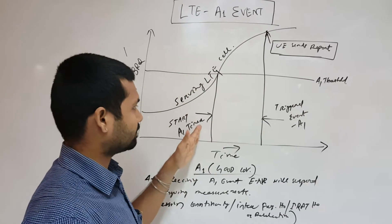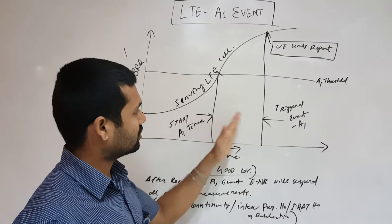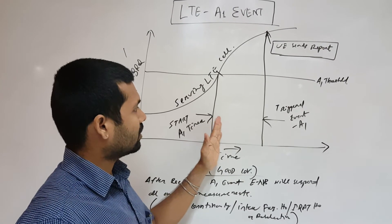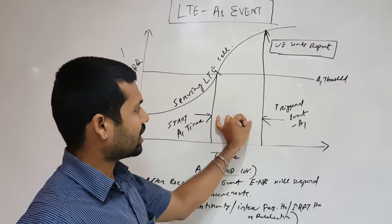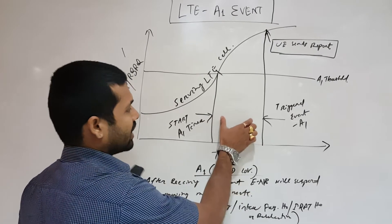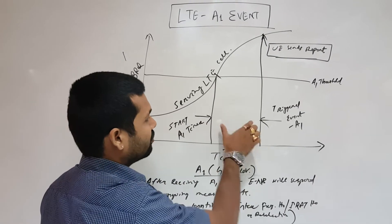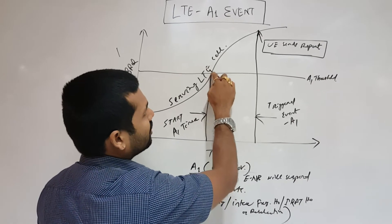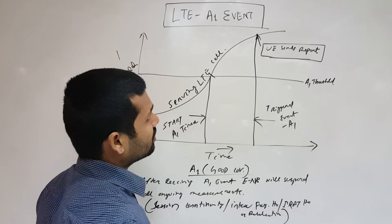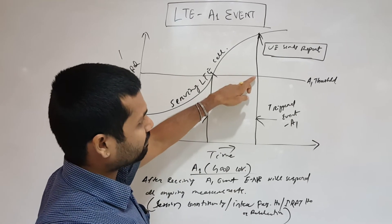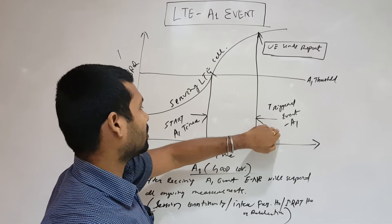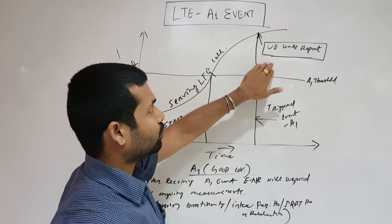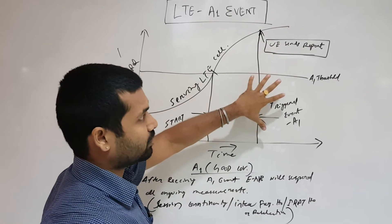And if the timer continues till the time, this is the time required to report the A1 event. So if it is continuous for this amount of time and the coverage is yet improving, at this point of time we stop the A1 event and we report. The UE sends the report to the eNodeB.